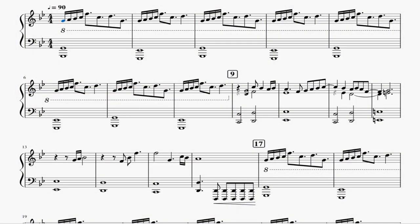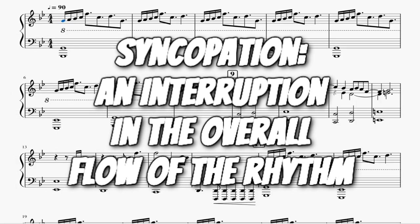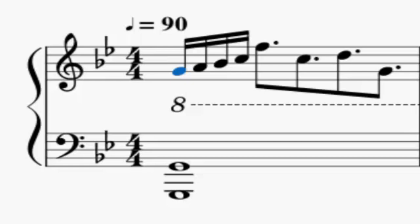The piano starts off by implementing syncopation, which is basically an interruption in the overall flow of the rhythm. Notice how the first beat of the melody is four sixteenth notes. Since four sixteenth notes equal one beat in a measure of 4-4, this is a perfectly normal way to start the melody.